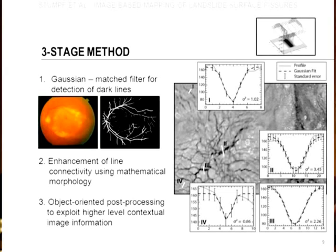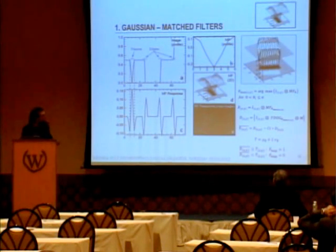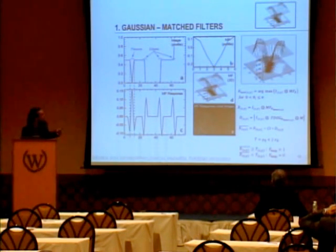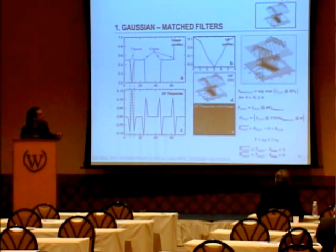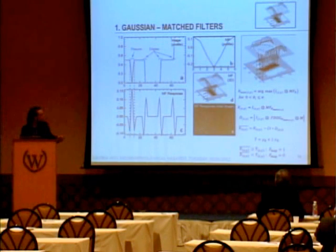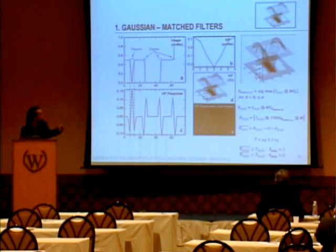And finally, an object-oriented post-processing procedure to eliminate some further false positives. So to show you the principle of the Gaussian matched filter, I made here a toy example, a 2D example. That would be the image where there are low gray values where there is a fissure. And you use such a kind of Gaussian filter. And this is the response you get. So you get a peak response at the fissure. But you get also still a lot of responses at edges.